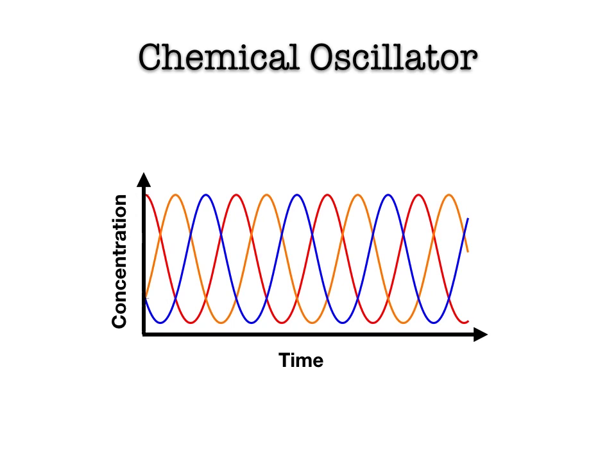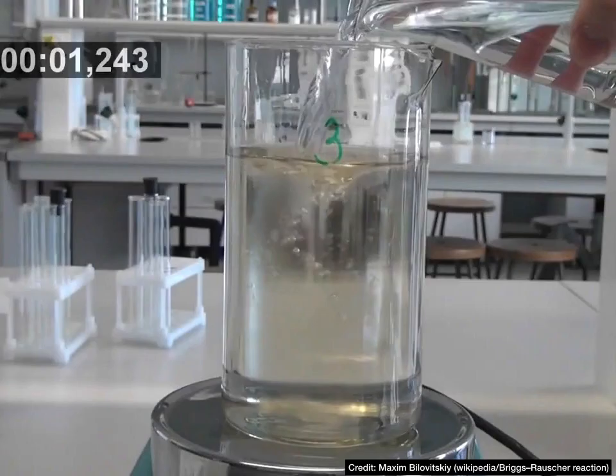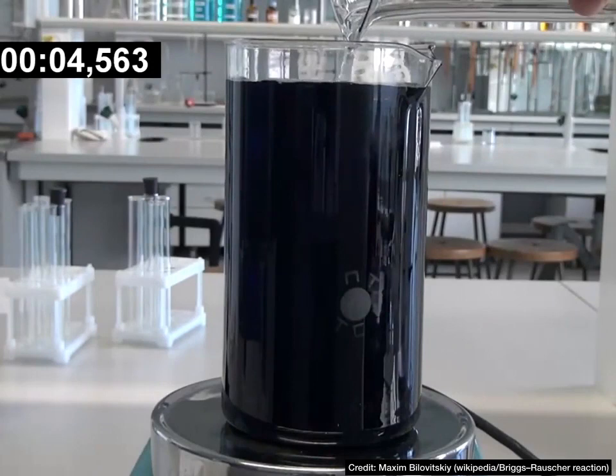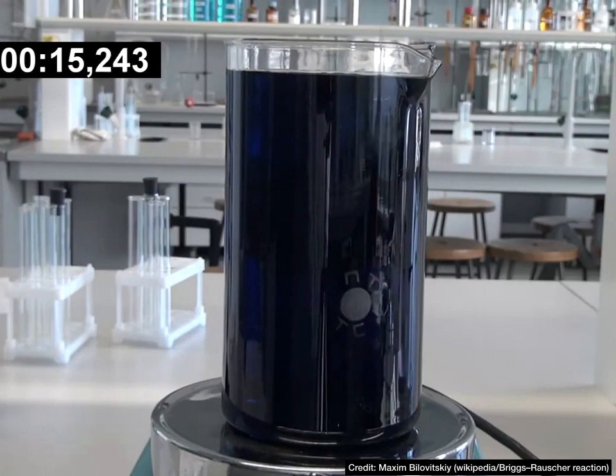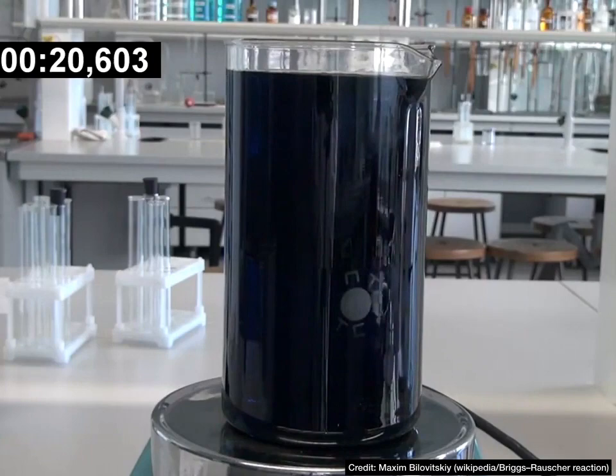What's a chemical oscillator? It's a chemical system that exhibits some kind of periodic behavior over time. You may have seen a demonstration like this in high school chemistry — you mix certain chemicals together and the color keeps changing back and forth over time. This is a classic chemical oscillator called the Briggs-Rauscher reaction.